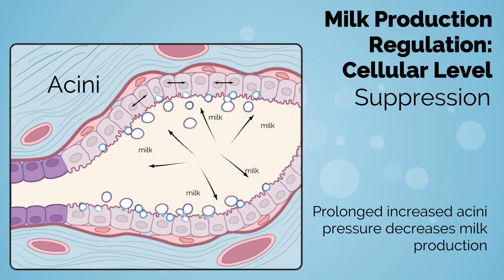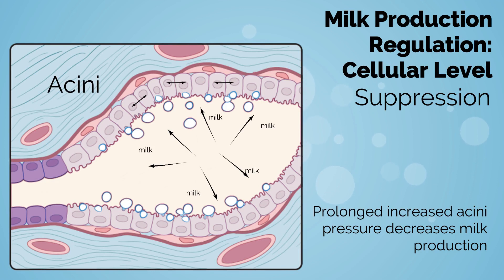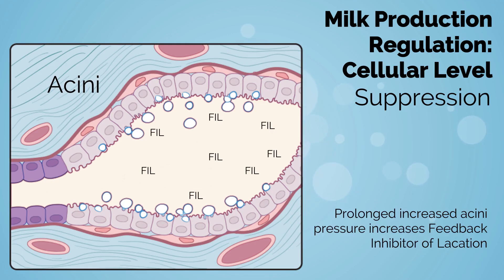If breast milk is not emptied, eventually there will be a reduction and involution of the mammary glands. The increased milk in the breast causes increased intramammary pressure, which decreases stimulatory hormones and disrupts the tight junctions between cells, thereby decreasing milk synthesis. The increased pressure also increases feedback inhibitor of lactation, or FIL, a polypeptide which accumulates in the breast milk, causing a downregulation of cell surface prolactin receptors.